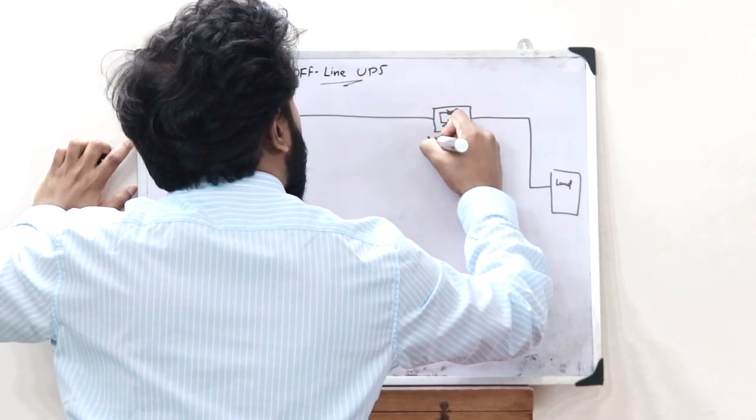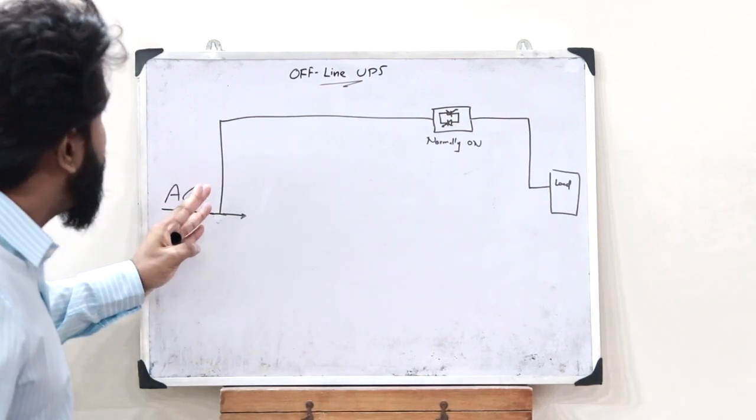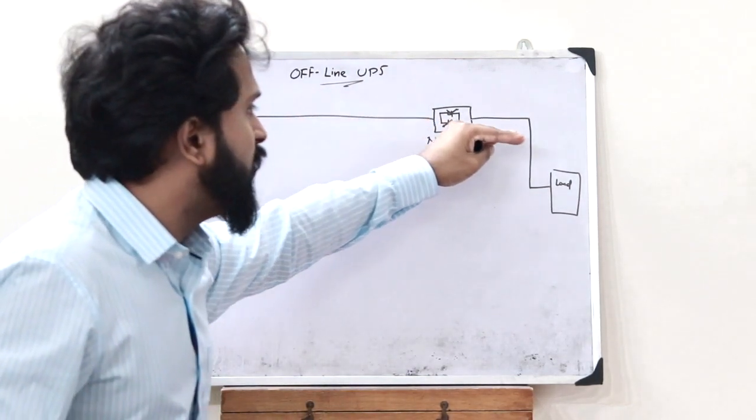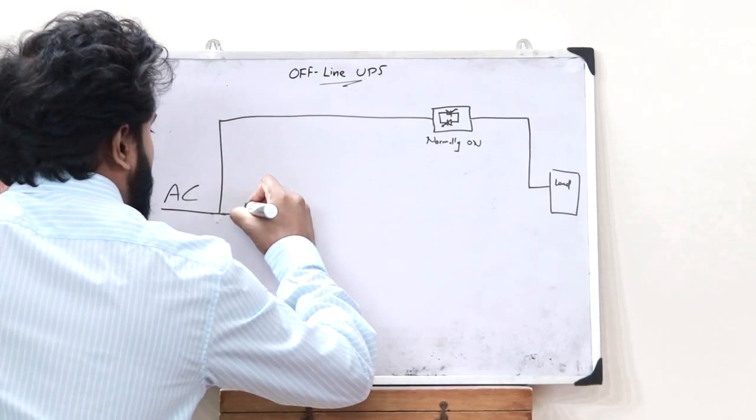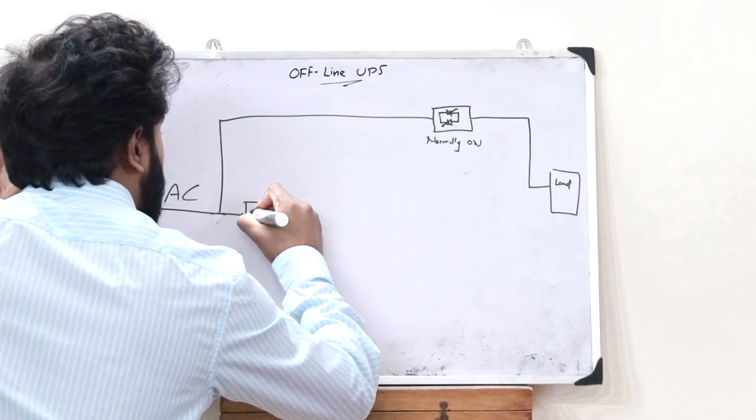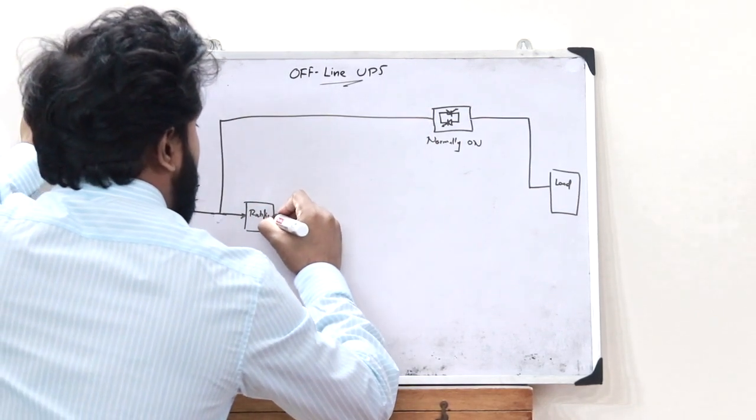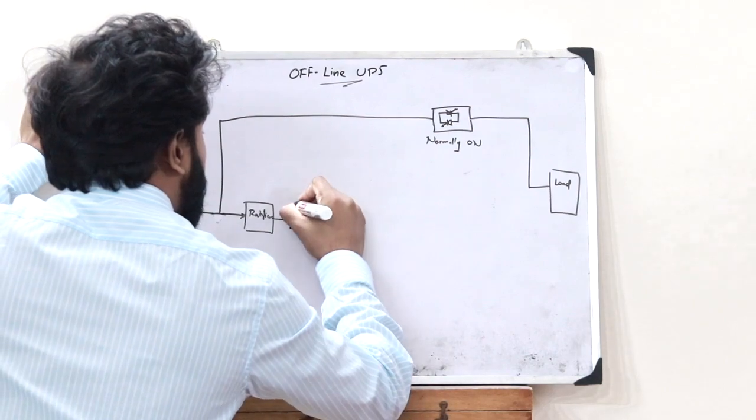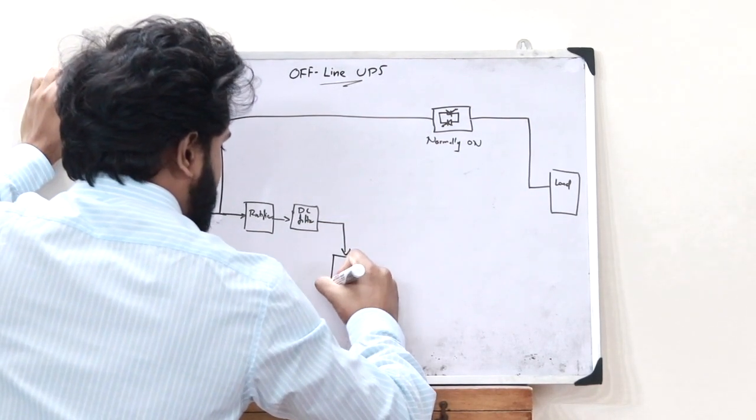This static switch is normally on. So when there is an input current coming, it is directly connected to the load, and in parallel to that, it is passed through a rectifier circuit which converts this AC to DC, and this is passed through a DC filter and stored inside a battery.